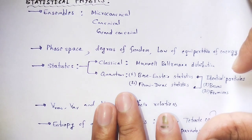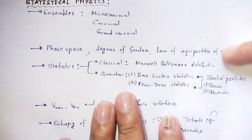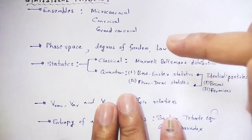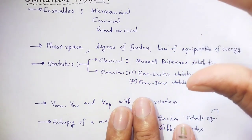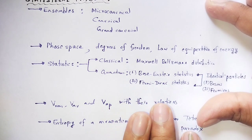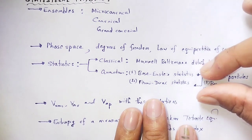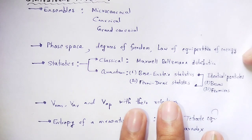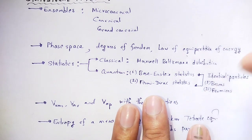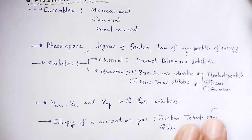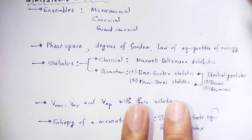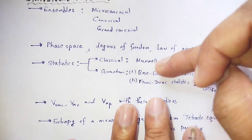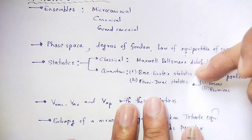Statistics: classical statistics and quantum statistics. Classical statistics includes Maxwell-Boltzmann distribution. Quantum statistics includes Bose-Einstein statistics and Fermi-Dirac statistics for identical particles. Bosons follow Bose-Einstein statistics and fermions follow Fermi-Dirac statistics.